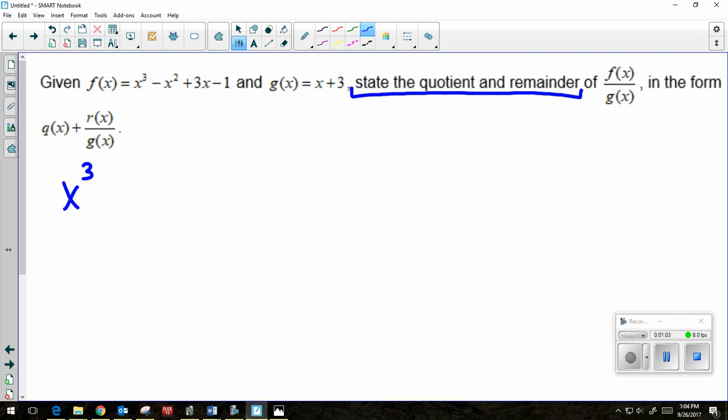They want me to put f(x) divided by g(x). So I'm going to set it up: x³ - x² + 3x - 1 divided by g(x), which is x + 3. They want us to state it in this form here, but all that means is the quotient plus the remainder over our divisor. We'll talk about that when we get to the end of the question. But first, let's divide.